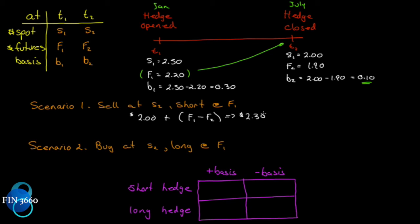The $2.30 is made up of two components: F1 plus B2. The basis is positive, so it actually helped us. We locked in a price of $2.20 but realized $2.30 because of the basis. Now let's look at the long hedge scenario — buying the asset at S2, going long at F1.